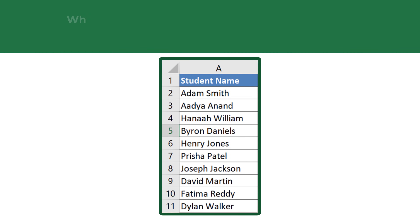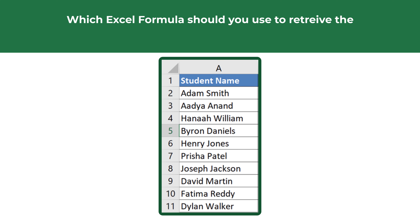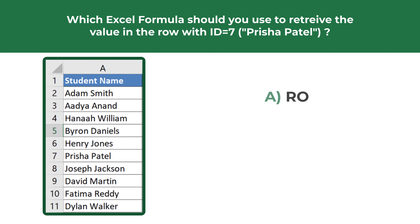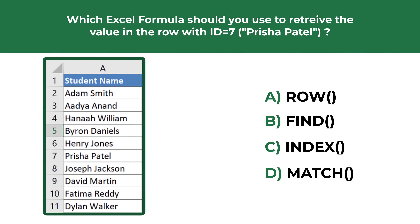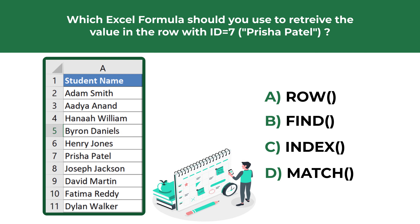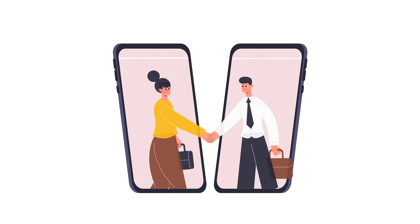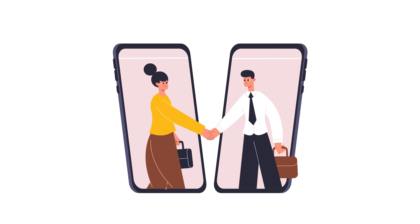You're presented with a list of student names in column A, and you need to decide which Excel formula to use to retrieve the value of the row with ID 7 — the value in this row is Prisha Patel. The four choices are: A) ROW, B) FIND, C) INDEX, D) MATCH. Give yourself 10 to 20 seconds and try to pause the video to come up with the right solution.